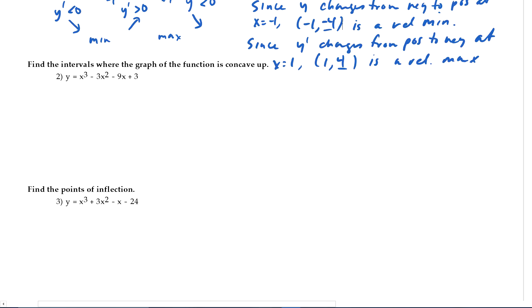Number 2, interval is where it's concave up. Concavity is, concave up is where the second derivative is positive. So y prime is 3x squared minus 6x minus 9. Second derivative is 6x minus 6. And it's going to change from, second derivative is going to change from being positive to negative when it's 0.